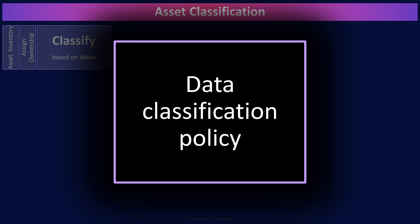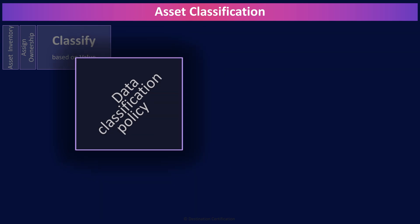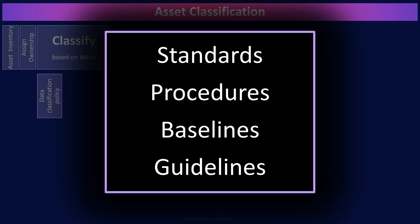All of this should be documented in a data classification policy. Standards, procedures, baselines, and guidelines should then be created based on the policy. Procedures will define step-by-step instructions for classifying data based on the classes defined in the policy. Baselines will define minimum security requirements for each class. Remember that point.